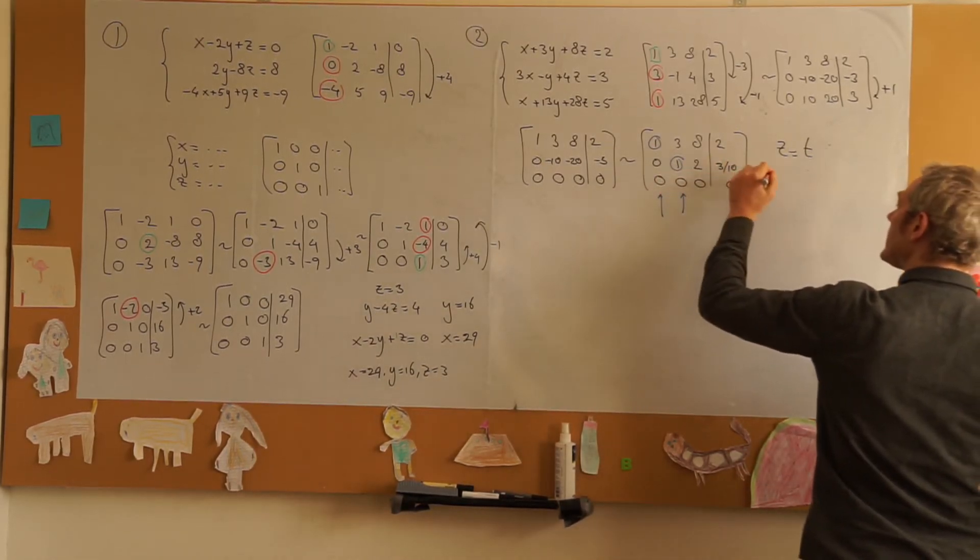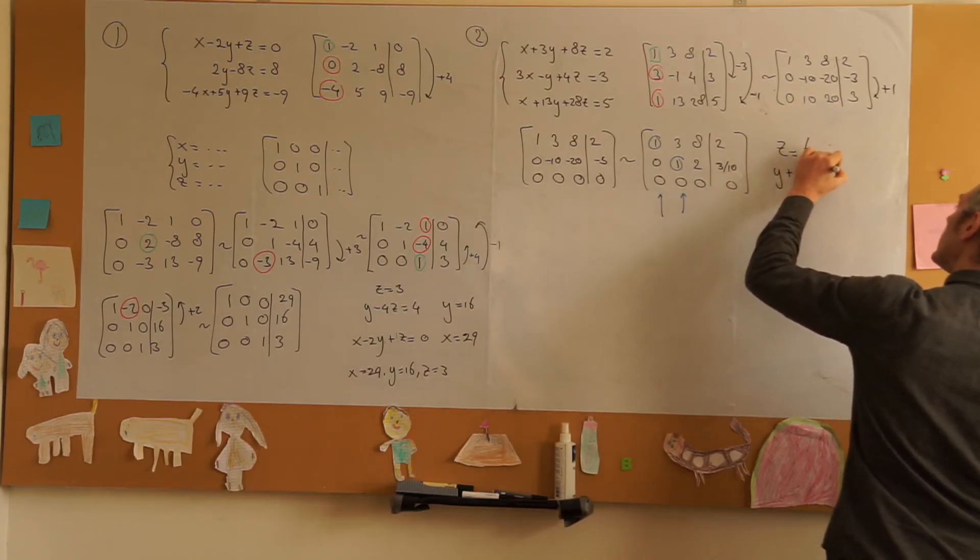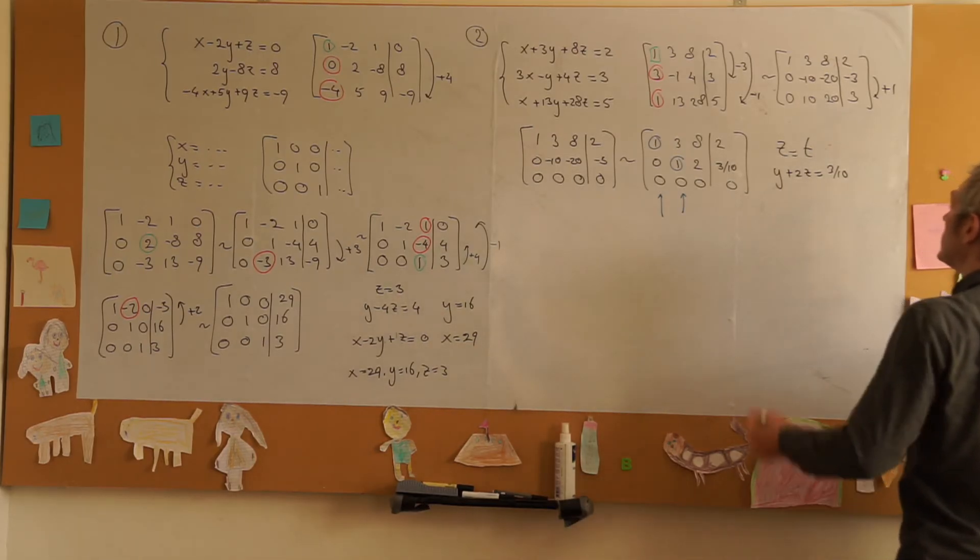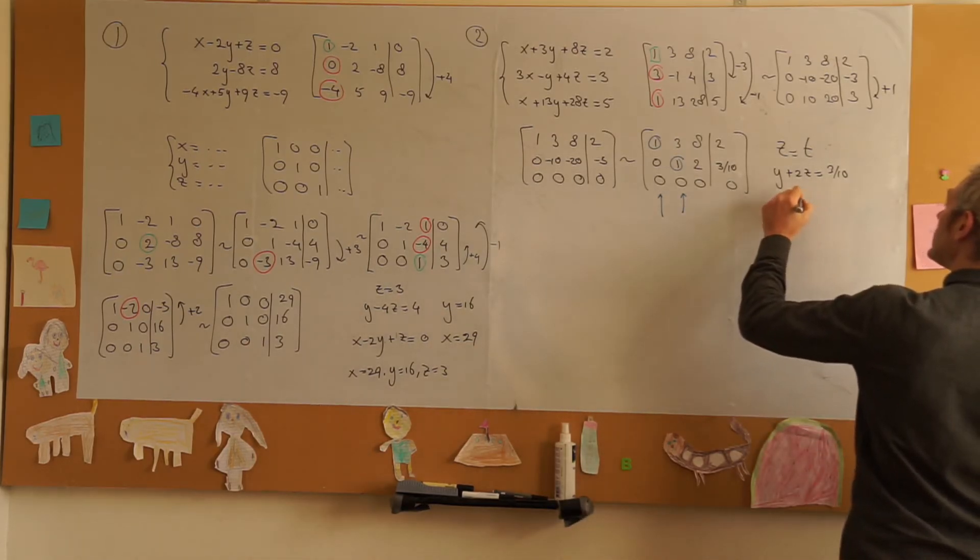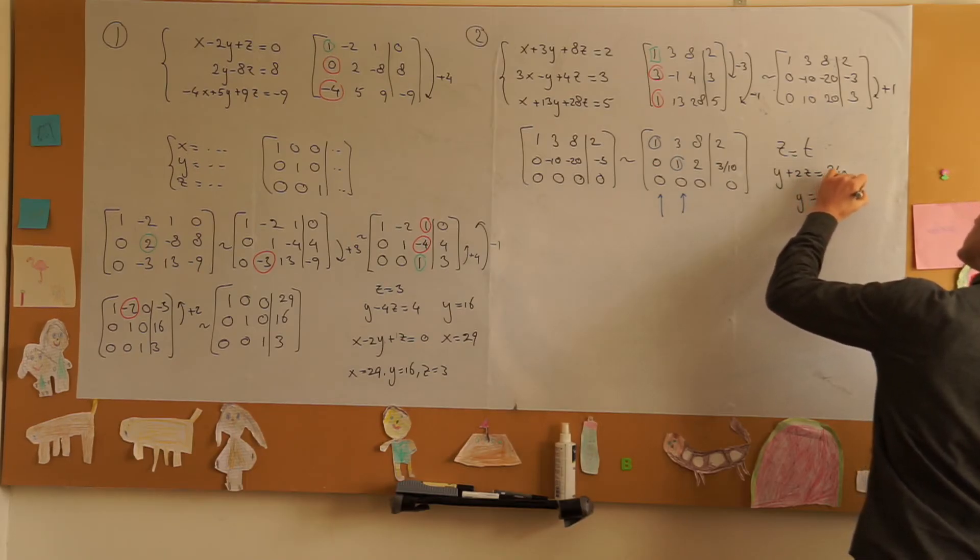And I know that from the second row y plus 2z is equal to 3 over 10. As we have chosen that z is equal to t we can write y is minus 2t plus 3 over 10.